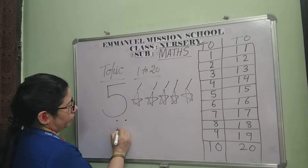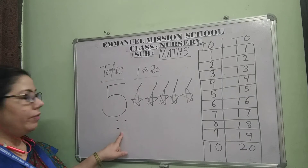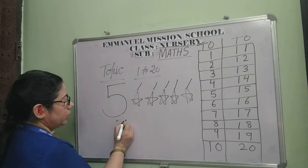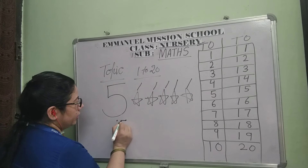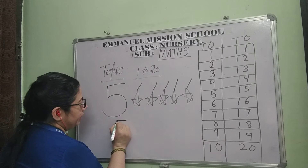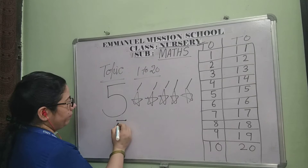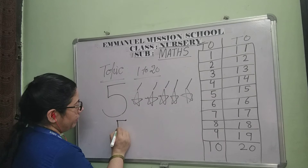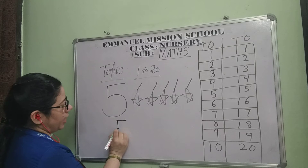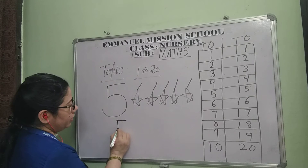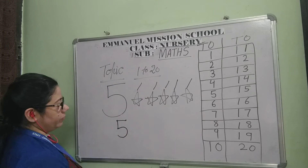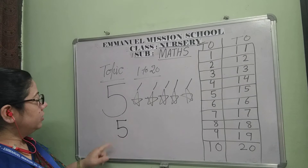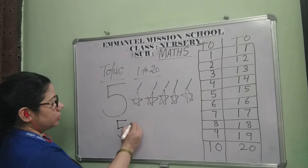First of all, we will make a dot and sleeping line. We will make standing line and half cup. 5 stars.